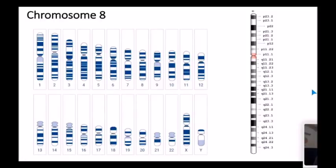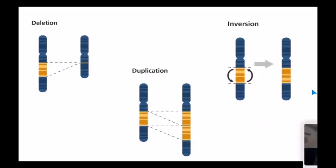Sometimes these chromosomes get cut and pasted back together in a different order than how they look in most people. Sometimes these changes don't seem to have any effect, and other times they do. Here are a few examples of differences that can affect chromosome 8.